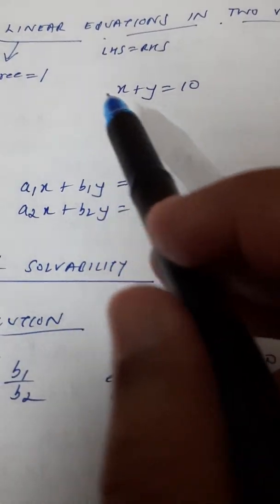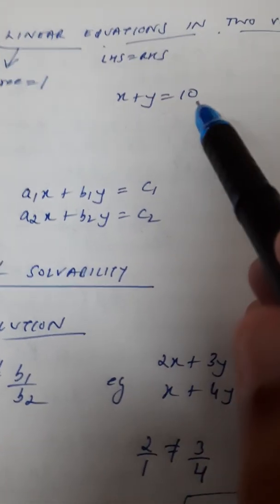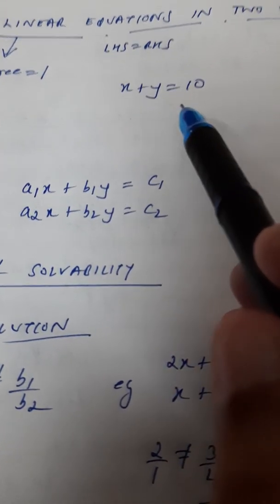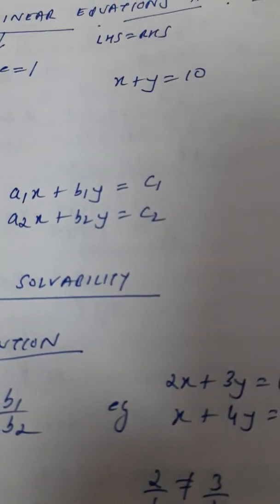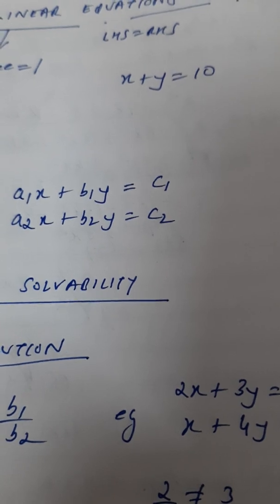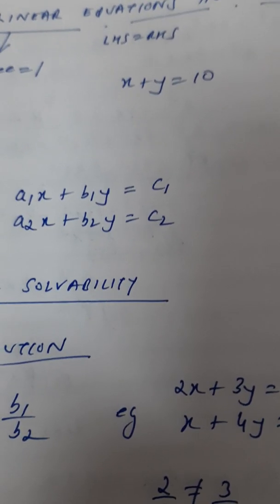So, this is an example of a linear equation in two variables. X plus Y is 10. Now, if one equation is given, we can have so many answers, right? X plus Y is 10. So, what are the values of X and Y? X could be 1, Y can be 9. X can be 5, Y can also be 5. It can be 6, 4, 4, 6, 3, 7.